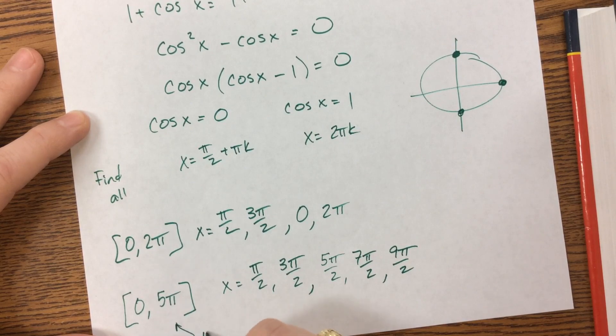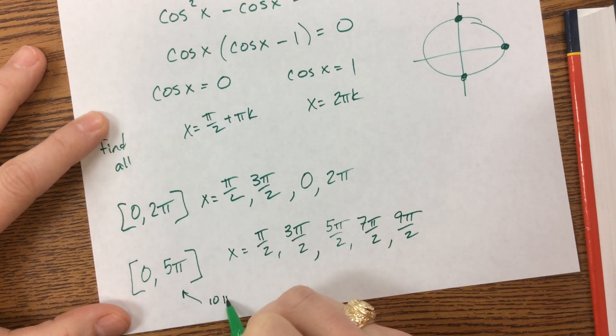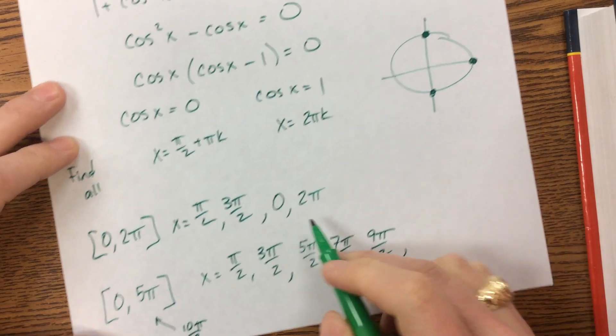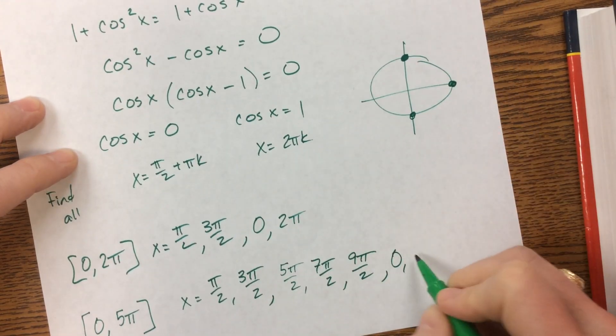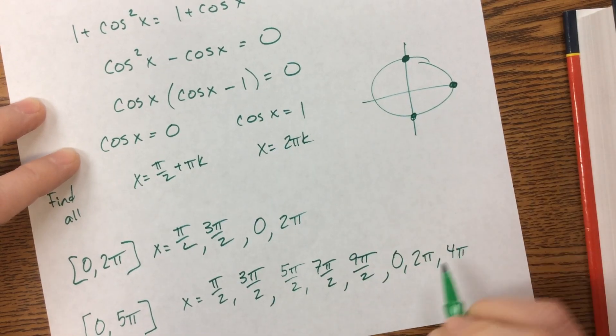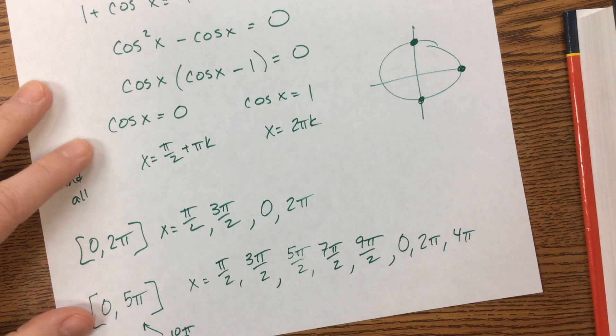Keep in mind this right here is 10π over 2. So if I do 11π over 2, that's too big. And then I'd have 0, I'd have 2π, I'd have 4π. And then if I keep going, 6π would be too big.